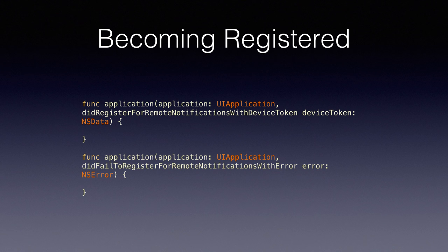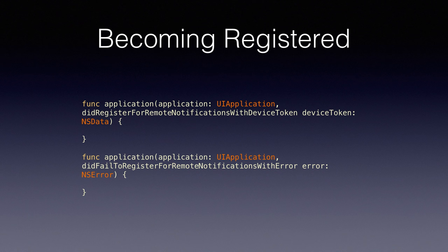Once you register for push — for remote pushes only — you should get one of two callbacks. All going well, you get didRegisterForRemoteNotificationsWithDeviceToken, which hands you an NSData object — basically a 20-character hex string. That's what we call the token: a unique identifier for that device and app from Apple. You'll always get a token even if the user says they don't want push, so it's not a good way to check if the user allowed push. The times you won't get a token are when you're using the simulator — simulators cannot register for push — or when you've made an error in the certificate and provisioning process, in which case you'll get an error with a useful localised description.